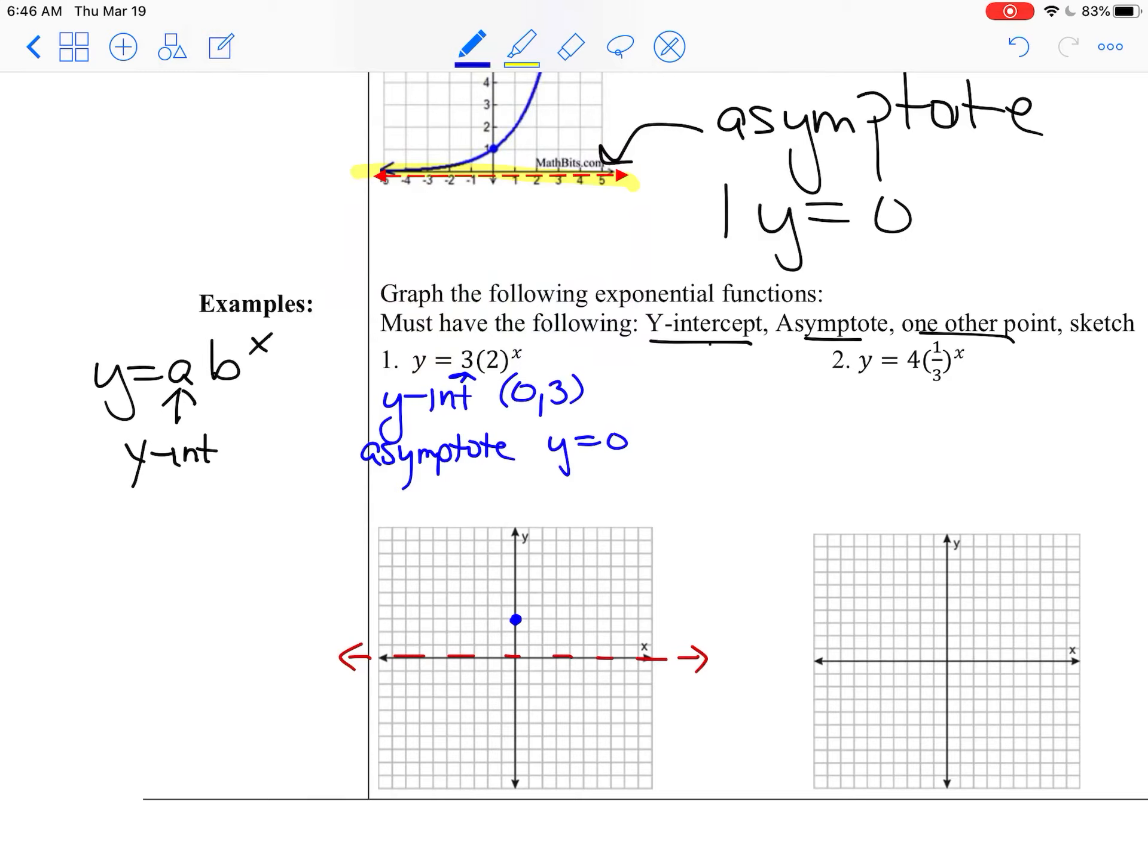And then you need one other point. So to do one other point, easiest thing to do is put a 1 into the equation and plot it. So I'm going to find when x equals 1. So I'm going to take my equation, y equals 3 times 2 to the first. Well, 2 to the first is 2, so it's 3 times 2, and that is 6. So the point is (1, 6).